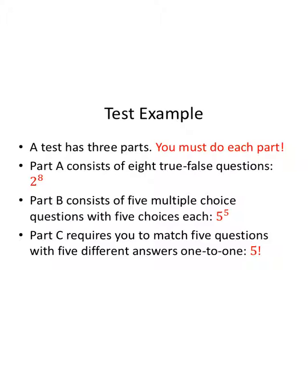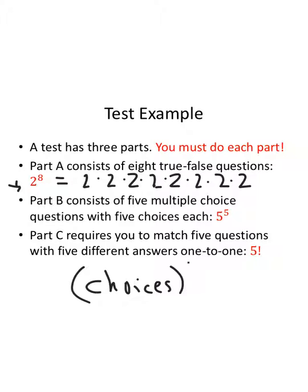So a test has three parts. It doesn't give you options. You have to do each part. Part A consists of eight true-false questions. So really what's going on here is for the first question, two possibilities. Second question, third, fourth, fifth, sixth, seventh, and eighth. Those are all twos, though they don't all look like them. Because you have either true or false, two options at each stage, and you have eight stages, we write it in terms of an exponential. Two to the eighth for our true-false. Part B consists of five multiple-choice questions with five choices each. It's always choices at each stage to the number of questions. That says questions, I know. You probably can't read it, but trust me.